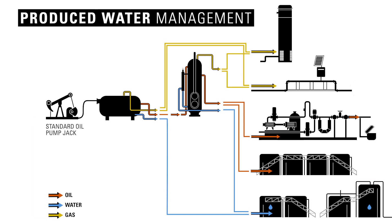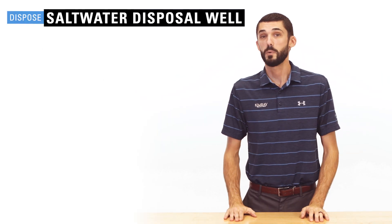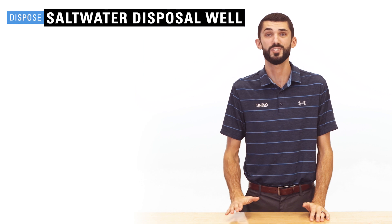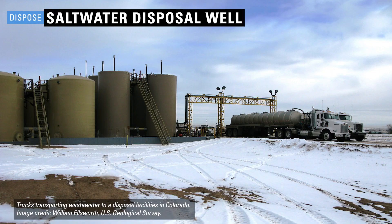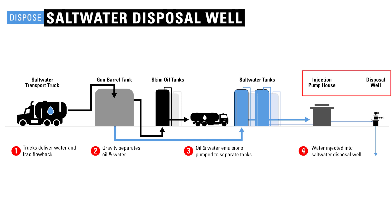Producers have two options for the produced water: dispose of it or treat it for reuse. A saltwater disposal well, or SWD, is used to inject the produced water from oil and gas wells into the disposal well. Trucks or pipelines transport the saltwater from the producing well to the tank battery on the disposal site. There, what oil remains in the water — referred to as skim oil — is separated into a holding tank. The oil will be sold and trucked away from the site, while the water will be injected into the disposal well.